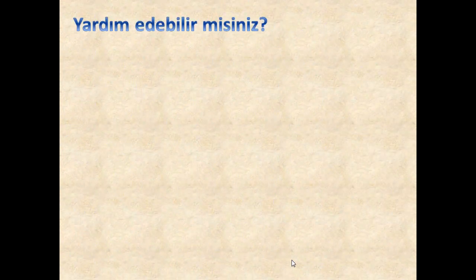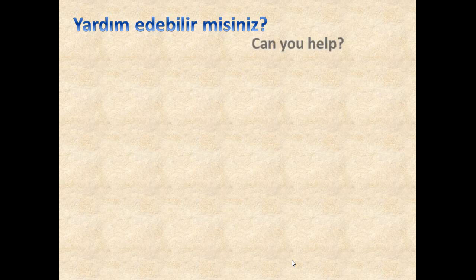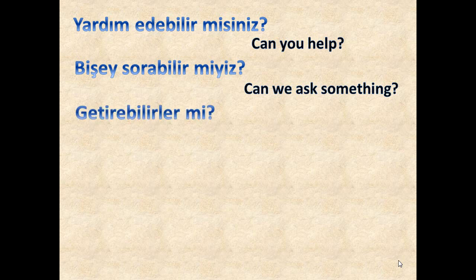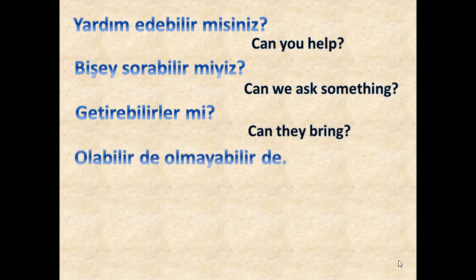Some general examples: 'Yardım edebilir misiniz?' — 'yardım edebilir misiniz' means 'can you help?' — this is in plural form or a polite form where you use plural to address the person you're talking to. 'Bir şey sorabilir miyiz?' means 'can we ask something?' 'Getirebilirler mi?' means 'can they bring?' 'Olabilir de, olmayabilir de' means 'it may be or it may not' — it might be possible or it might not be possible.